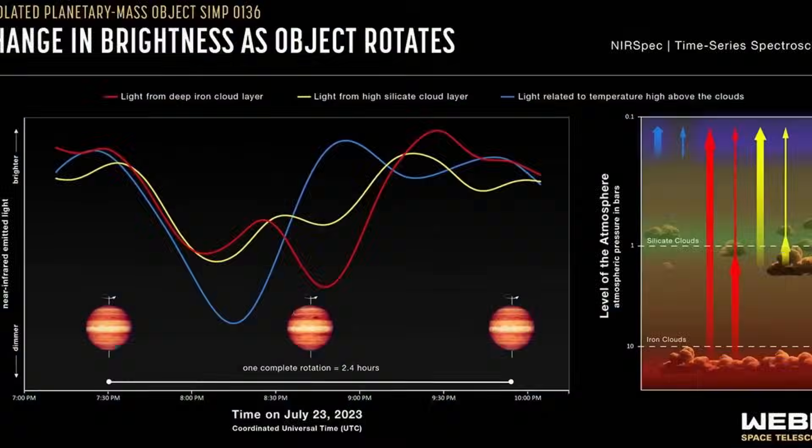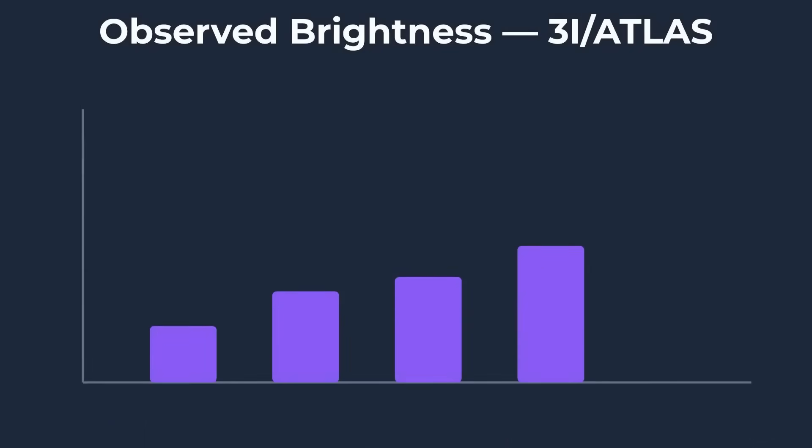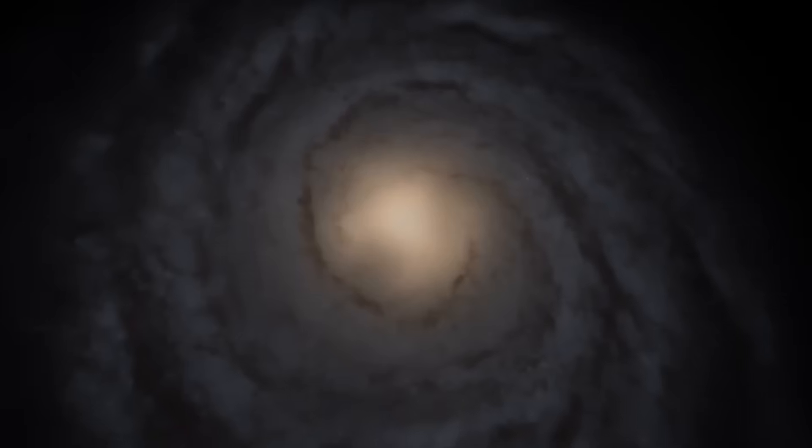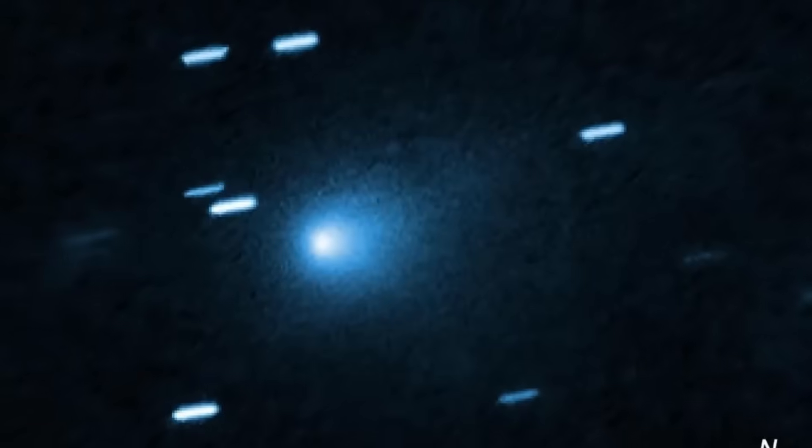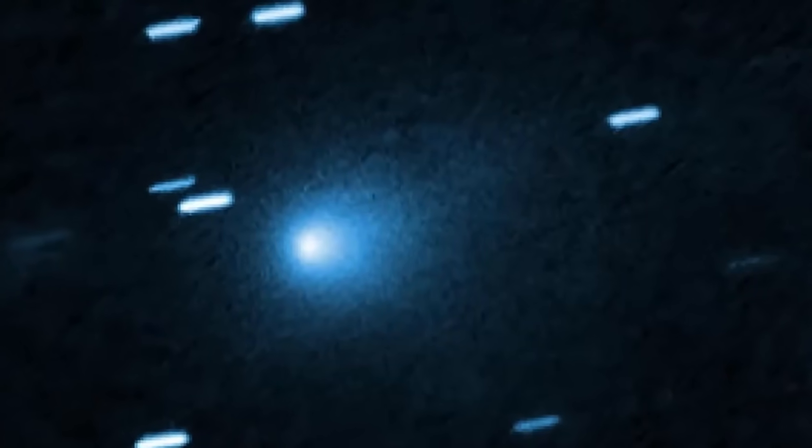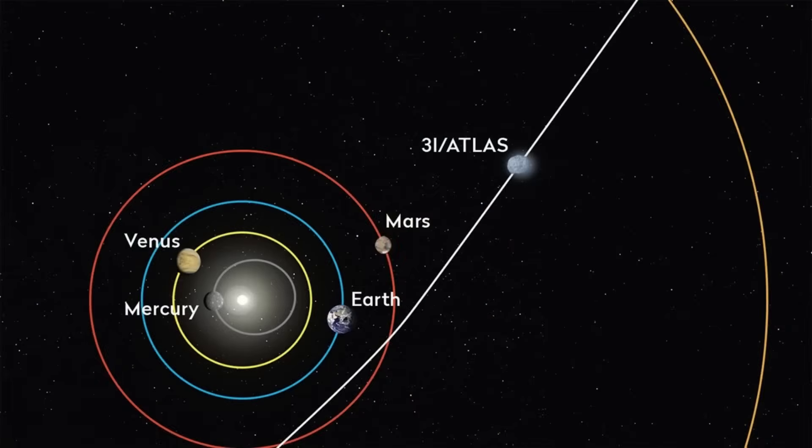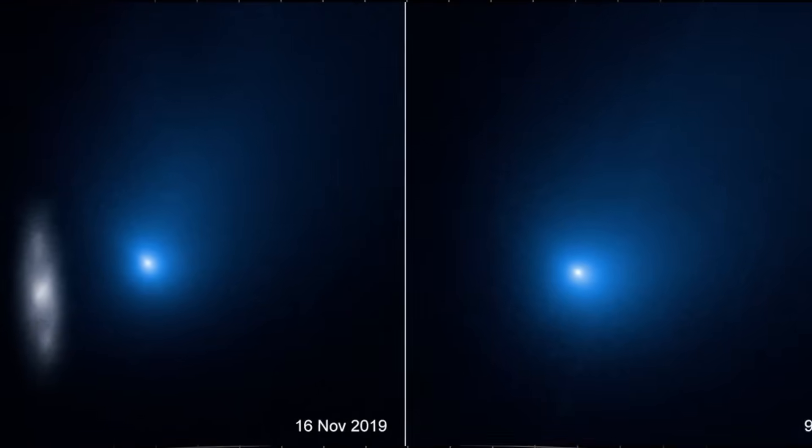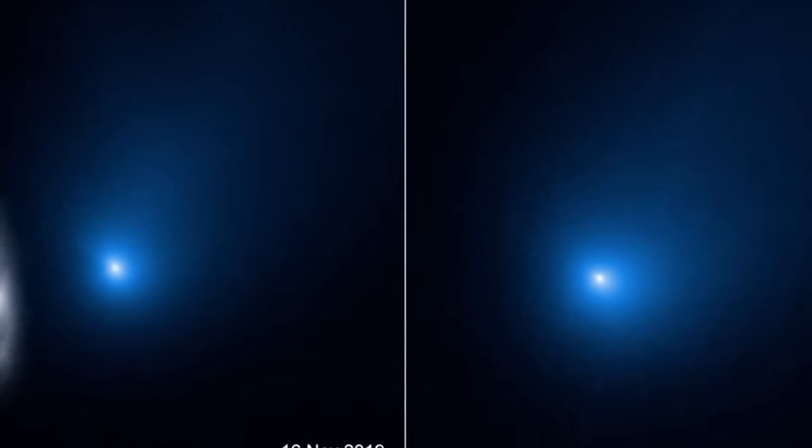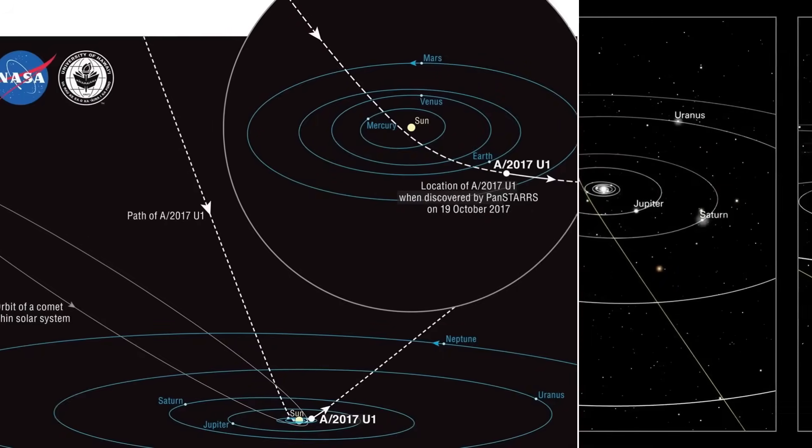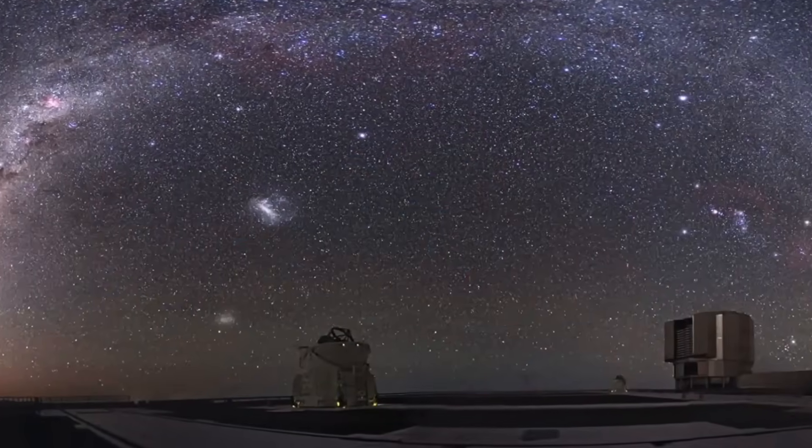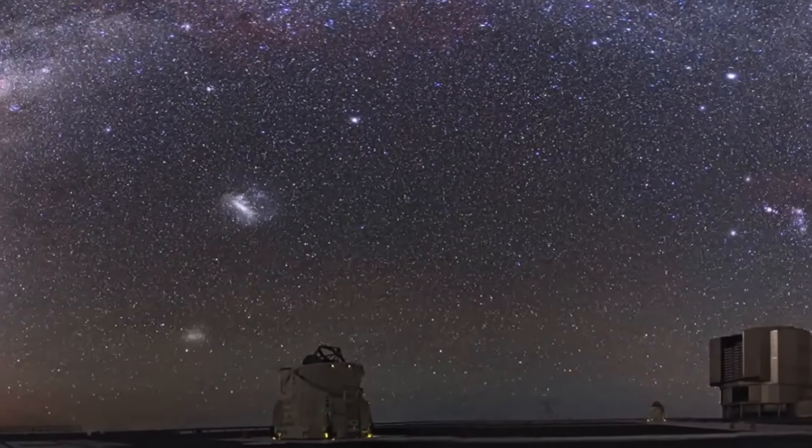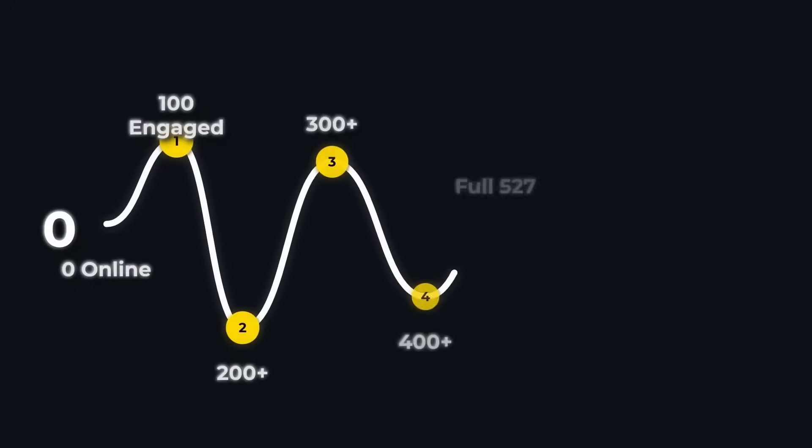Tracking 3i Atlas is not a job for a single observatory or a handful of astronomers. It's a global effort. From Chile to Hawaii, from South Africa to Australia, professional telescopes are constantly sweeping the sky, recording every photon, every subtle change in brightness, every shift in spectrum. But even the most sophisticated instruments can't catch every twist in Atlas's behavior. That's where amateur astronomers step in, forming an essential part of a worldwide network.